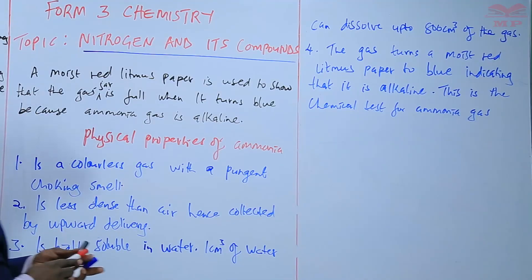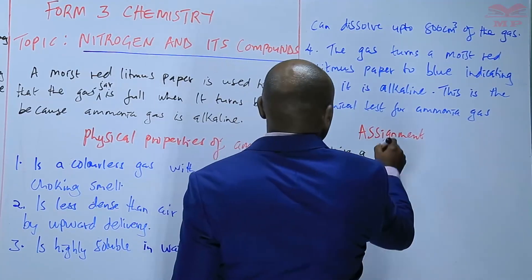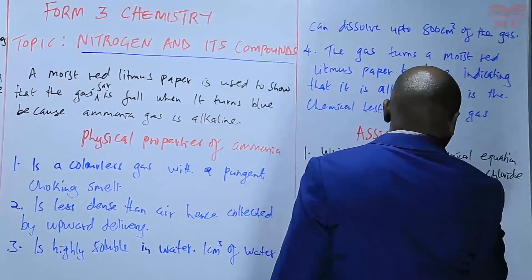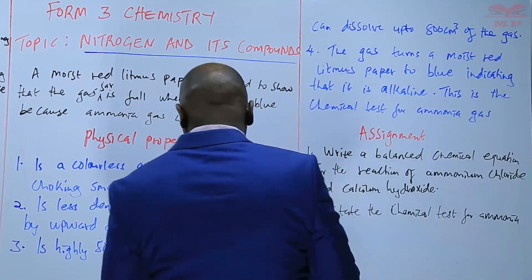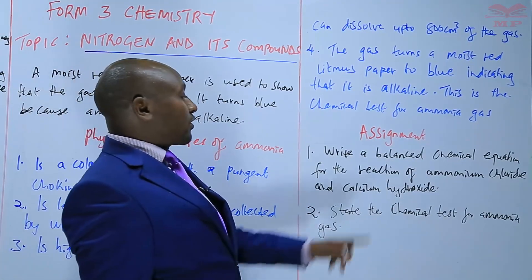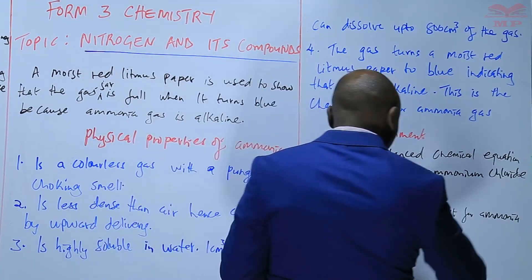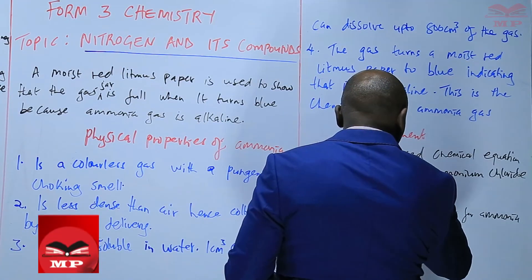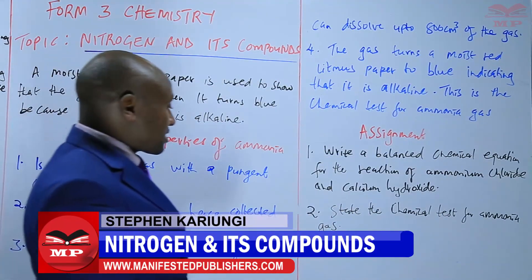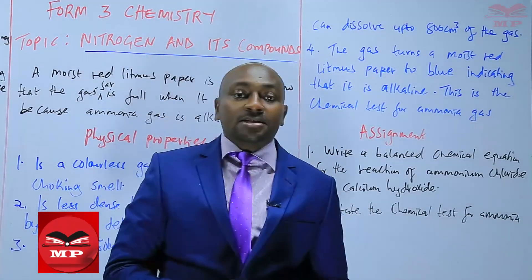The assignment for the day: number one, write a balanced chemical equation for the reaction of ammonium chloride and calcium hydroxide. Number two, state the chemical test for ammonia gas. We'll stop there until next time. Goodbye.